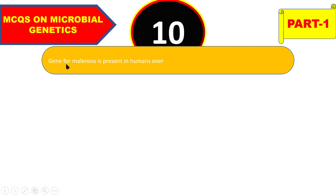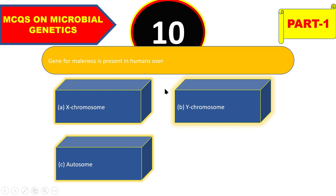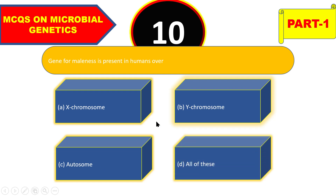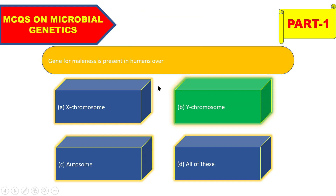The first question is: gene for maleness is present in humans on X chromosome, Y chromosome, autosome, or all of the above? The right answer is Y chromosome. Gene of maleness is located on the Y chromosome in humans.